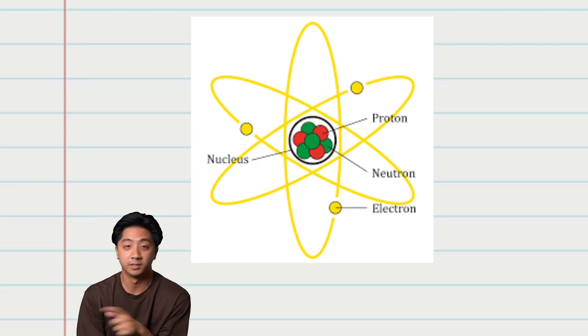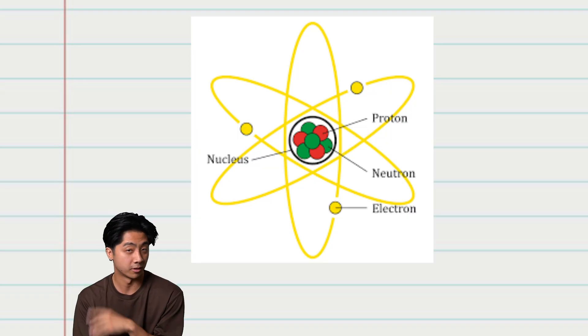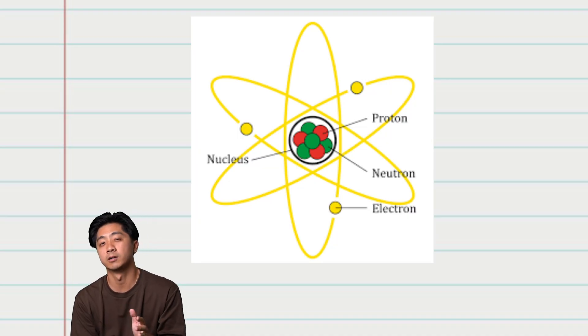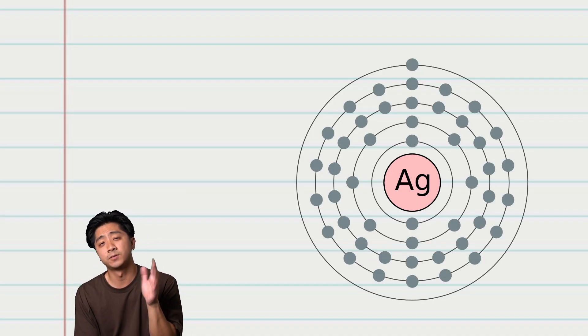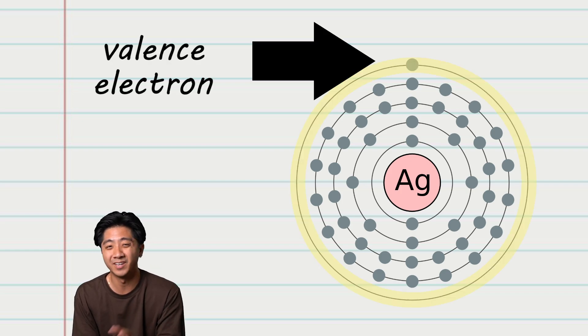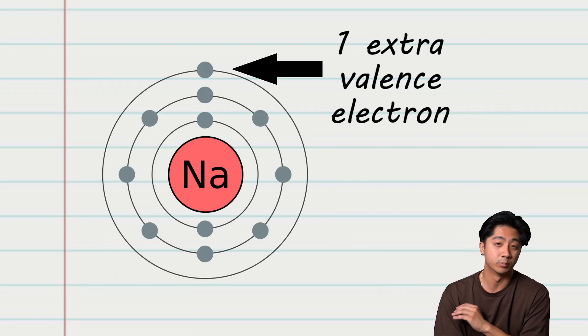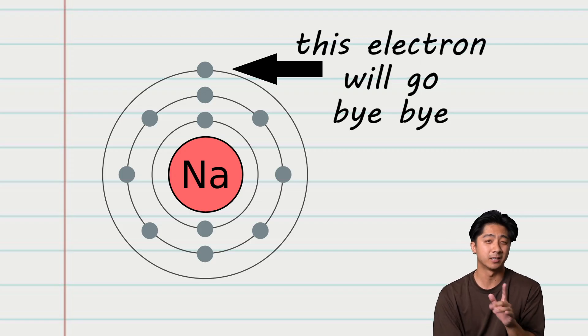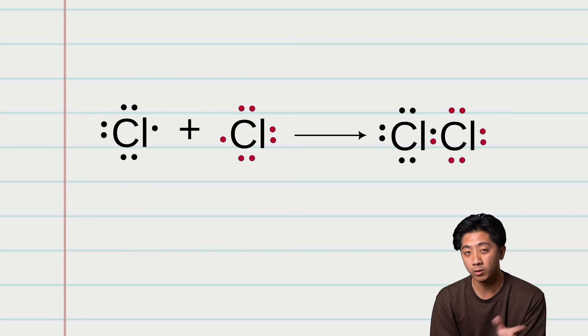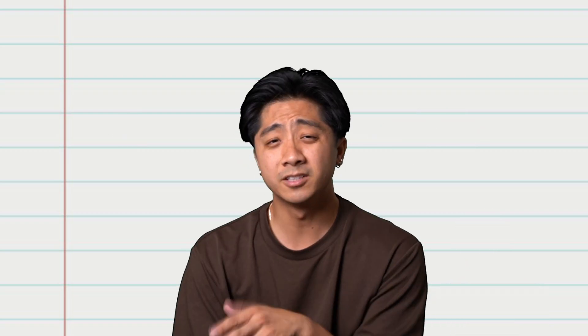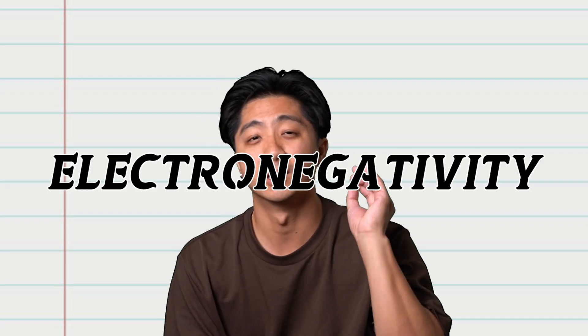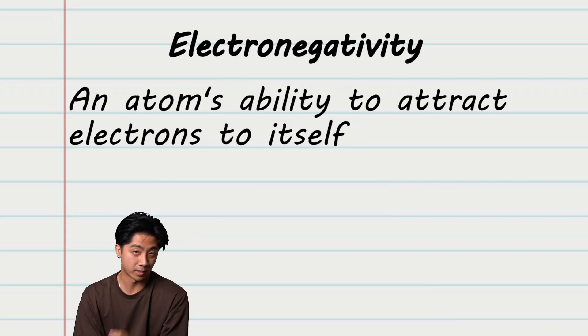Protons have a positive charge and are found in the nucleus. Neutrons have a neutral charge and are also found in the nucleus. And electrons have a negative charge and orbit the nucleus in what are called electron orbitals. The electrons found in the outermost orbital are called the valence electrons, and they determine the reactivity of an element. Every element naturally wants a complete valence shell. So they'll either kick an electron off, take an electron from something else, or share an electron with other elements. The likelihood to do this is measured by a property called electronegativity. This is the atom's ability to attract shared electrons to itself.